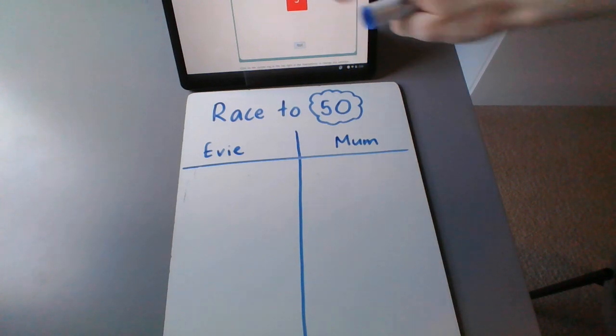We have our digital dice here. You can play with a regular dice. We are playing with a six-sided dice. You could play with a nine-sided dice. It's up to you.